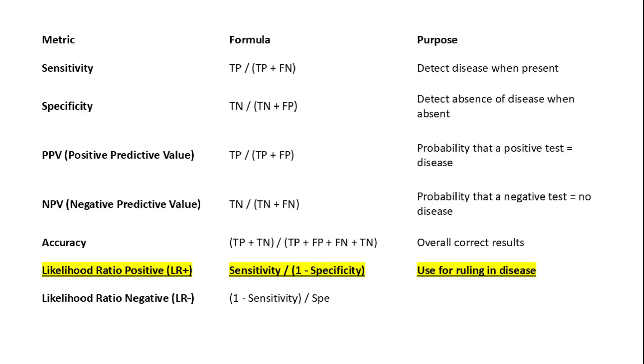Accuracy reflects the overall correctness of a test and is calculated by adding true positives and true negatives, and dividing by the total number of cases.